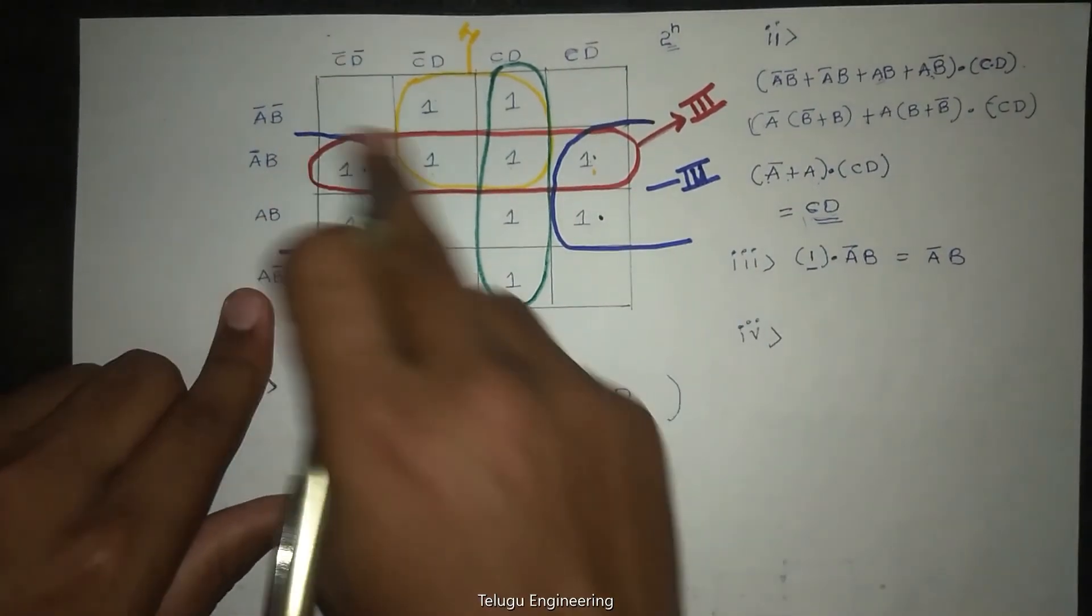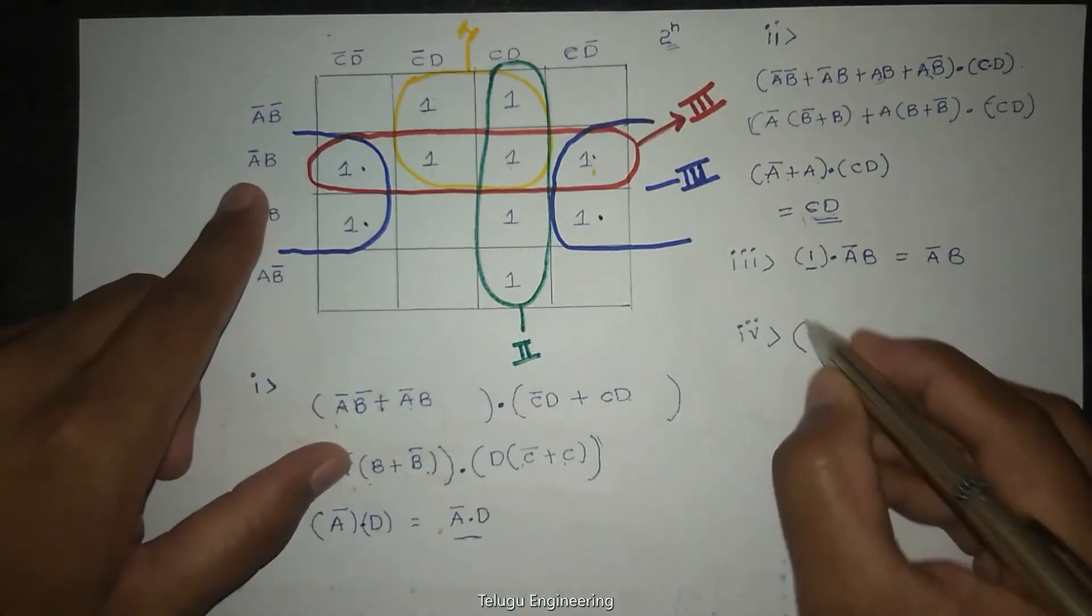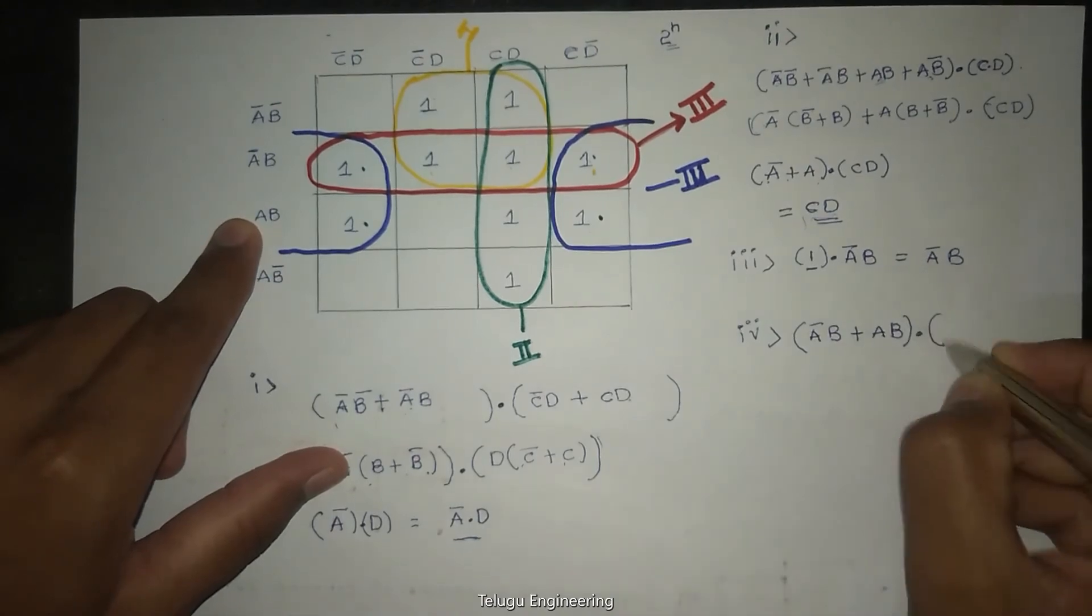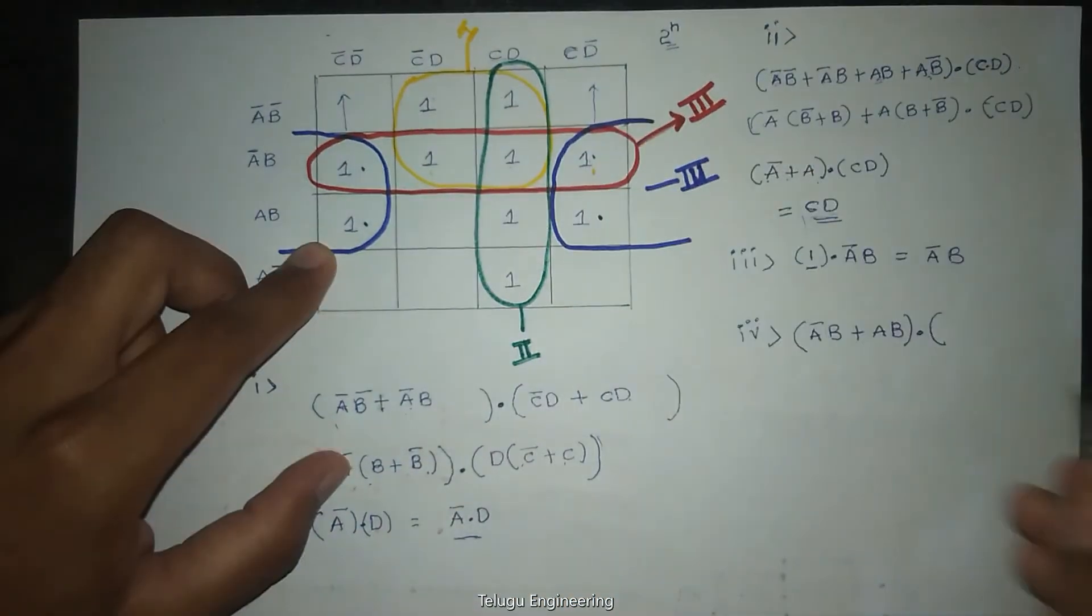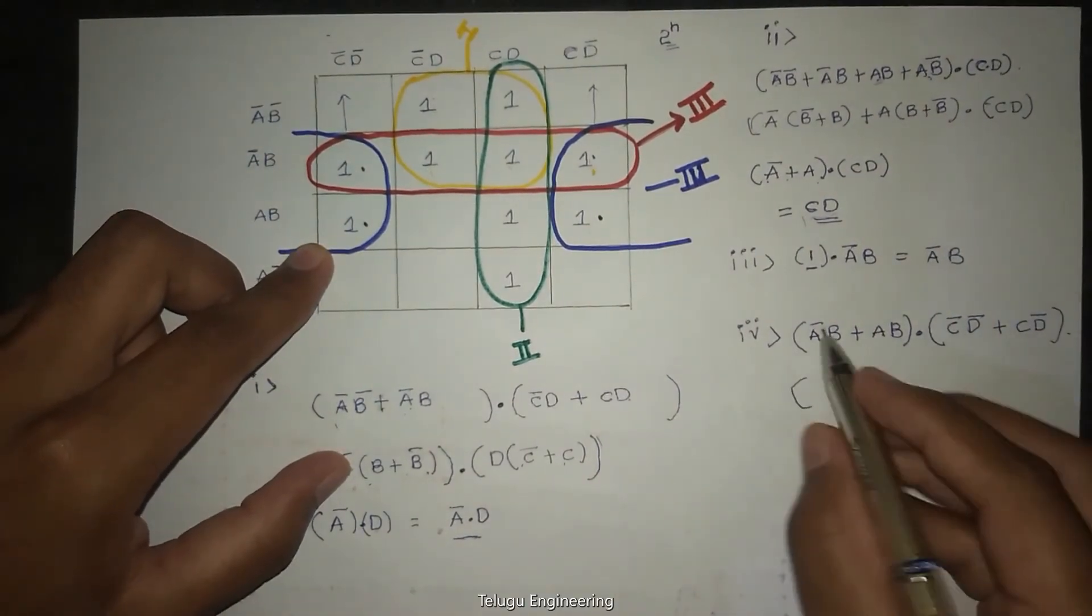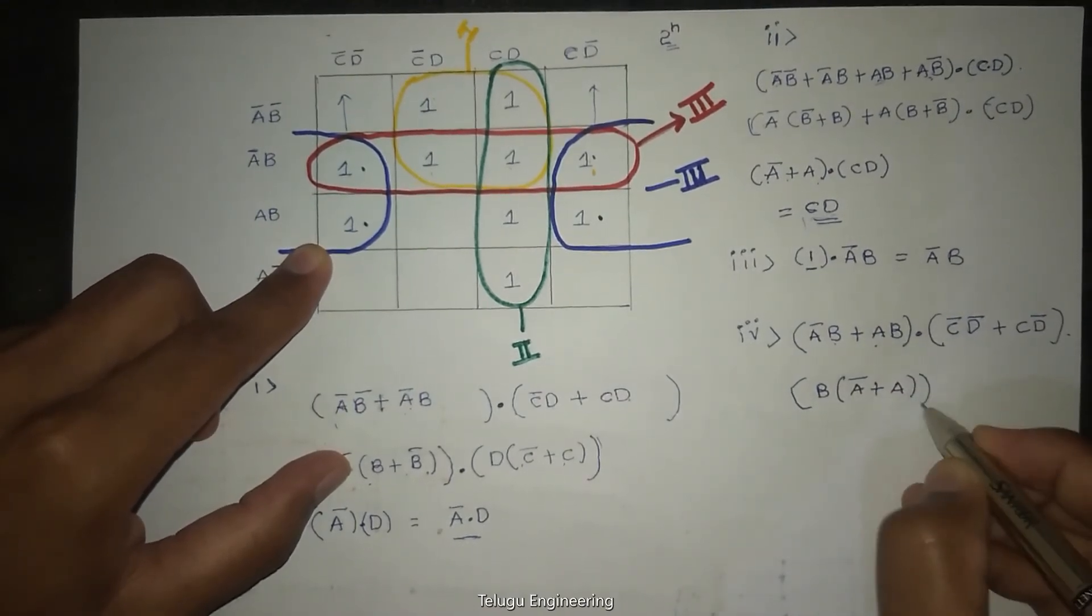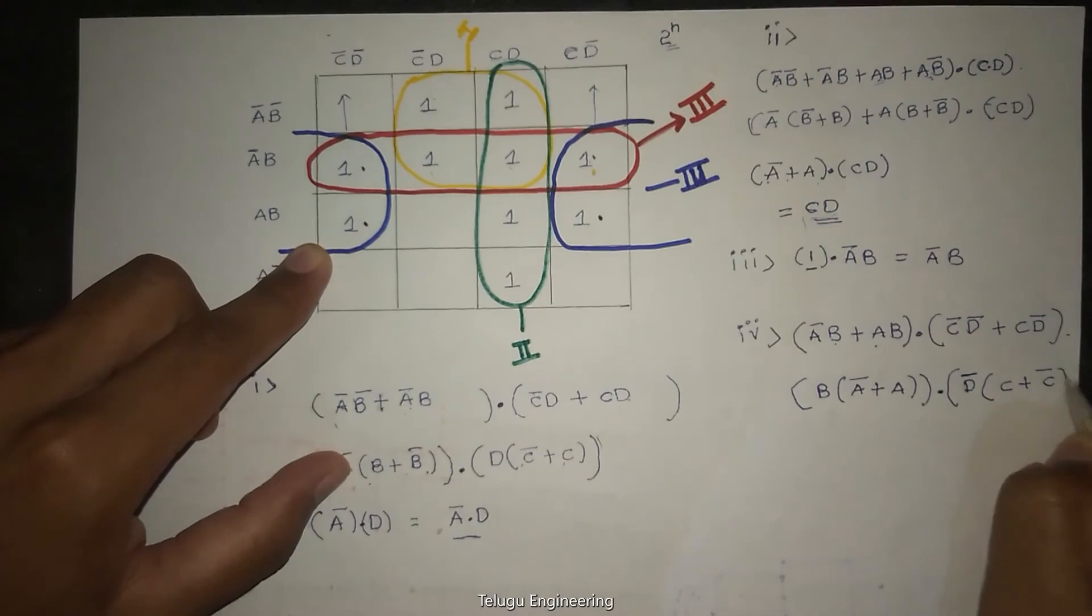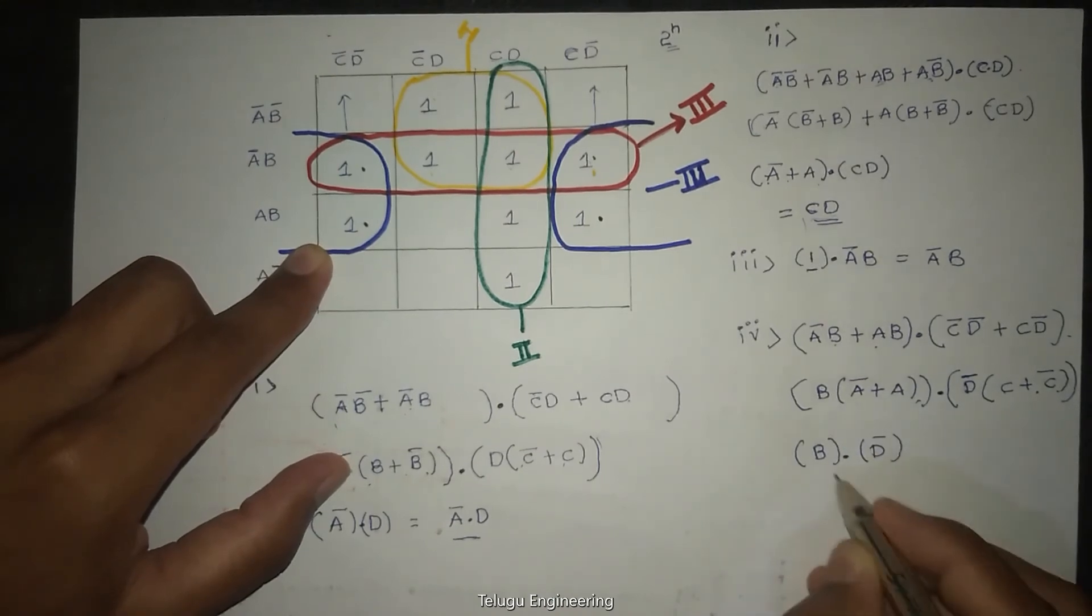And next the fourth one. Fourth one is the corner mapping. So the sides involved are A bar B plus AB, dot product with the columns involved C bar D bar plus CD bar. So B is common. This is A bar plus A times C bar plus C times D bar. A plus A bar is one, C plus C bar is one, so that is B bar dot D bar.